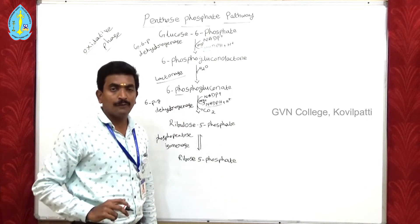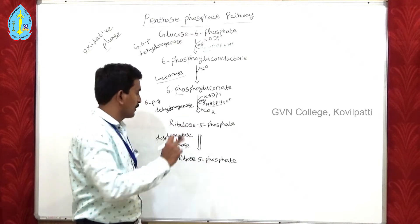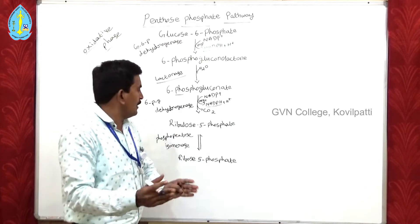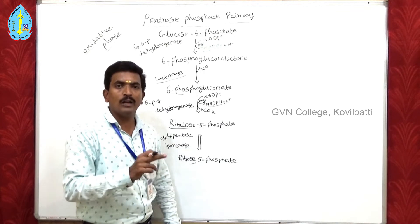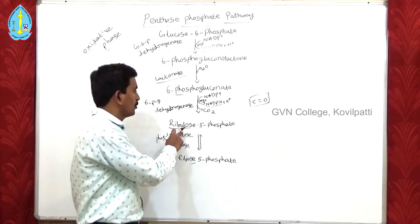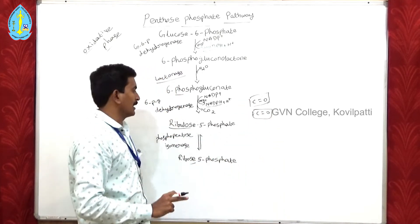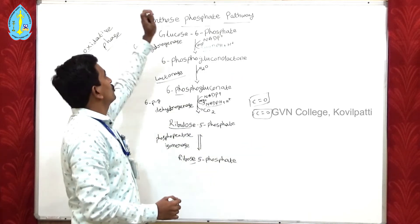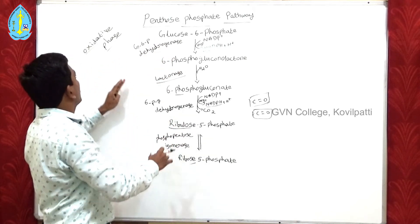The pentose sugar formed is called ribulose 5-phosphate. After ribulose 5-phosphate is formed, it is converted into ribose 5-phosphate with the help of the enzyme phosphopentose isomerase. Ribulose is a keto-sugar and ribose is an aldo-sugar. The keto means C=O is present at the second carbon atom in ribulose, while in an aldo-sugar the C=O is at the first carbon atom. This inter-conversion of keto to aldo forms ribose 5-phosphate. This completes the oxidative phase.